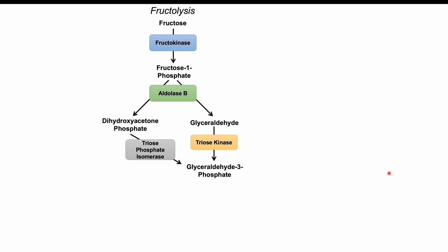In the fructolysis pathway, fructose is taken up by cells and acted on by the enzyme fructokinase, phosphorylating it to fructose-1-phosphate. Fructose-1-phosphate is then acted on by the enzyme aldolase B, which cuts it in half into dihydroxyacetone phosphate and glyceraldehyde. Both dihydroxyacetone phosphate and glyceraldehyde can then be converted into glyceraldehyde-3-phosphate by the enzymes triose phosphate isomerase and triose kinase, respectively.